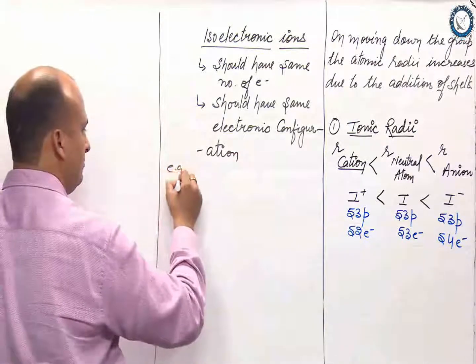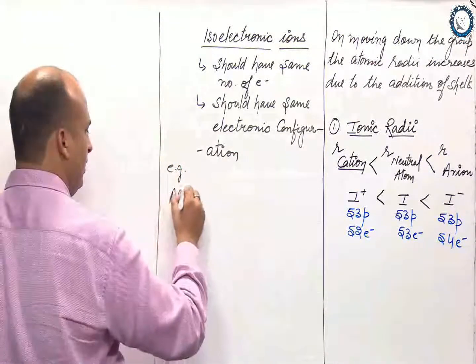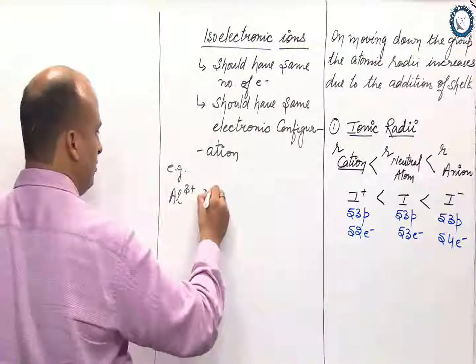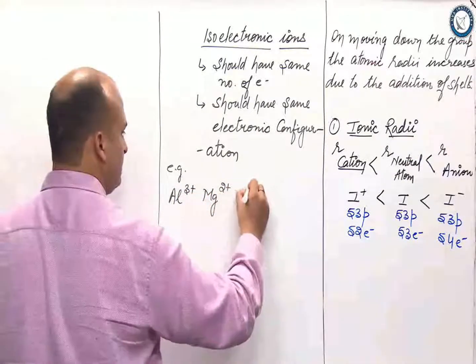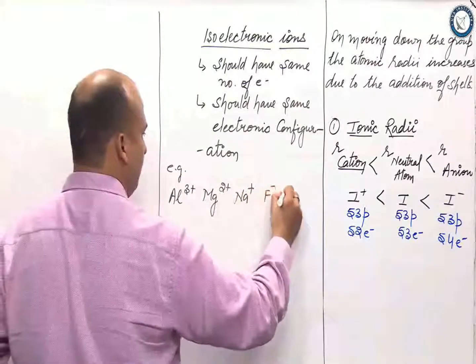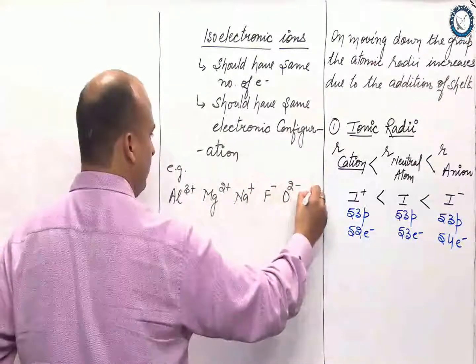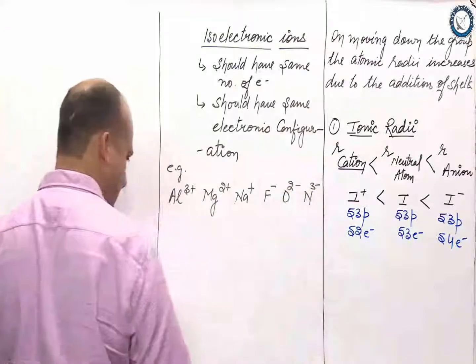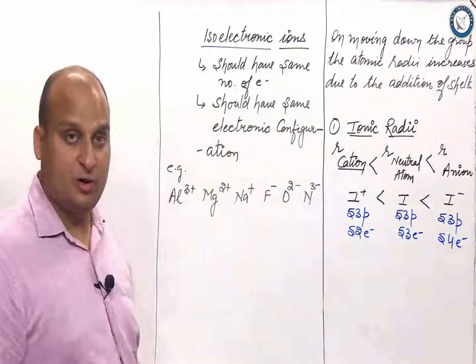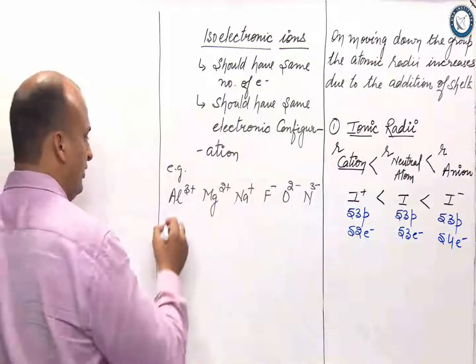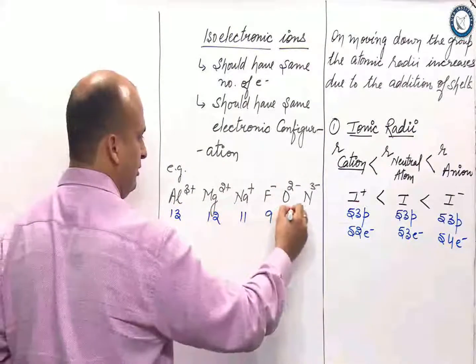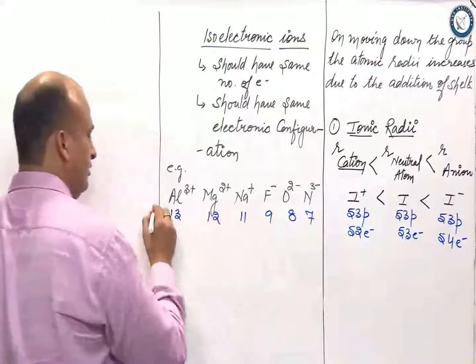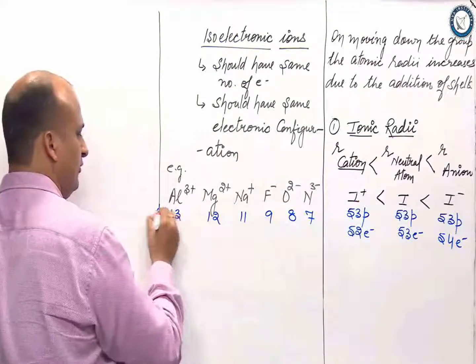Say for example, Al 3 plus, Mg 2 plus, Na plus, F minus, O 2 minus, N 3 minus. Let us see how many protons all of these are having: 13, 12, 11, 9, 8, 7. These are the number of protons that they are having.